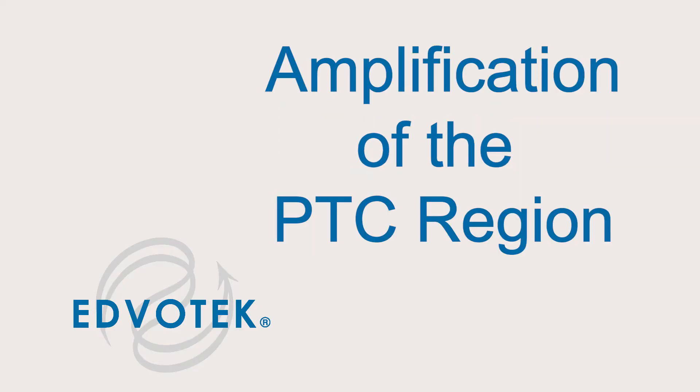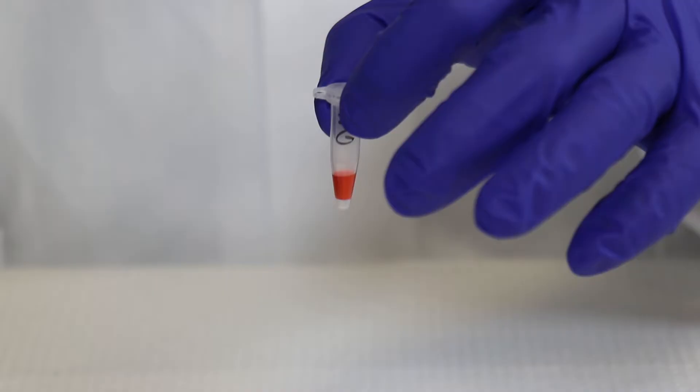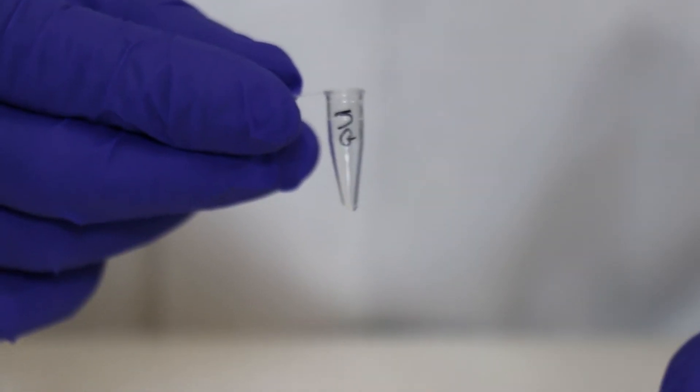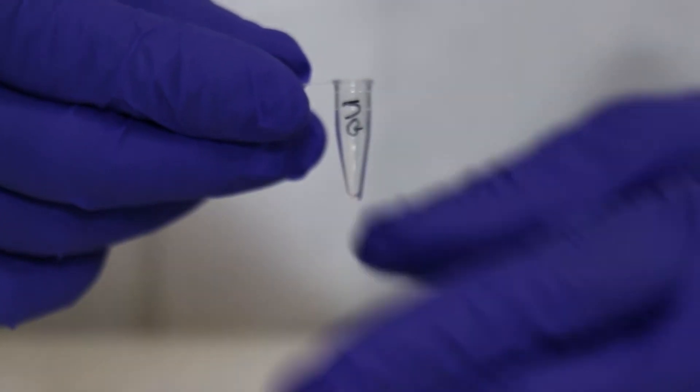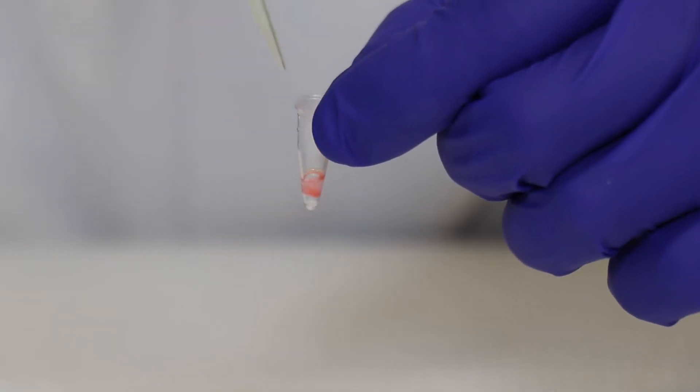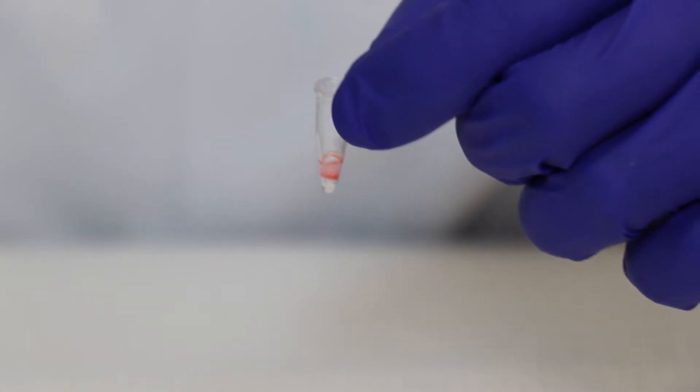Module 2: Amplification of the PTC Region. Step 1: Obtain the extracted DNA from Module 1. Step 2: Label a fresh 0.2 milliliter PCR tube with your initials.